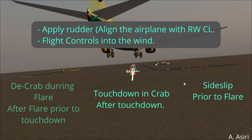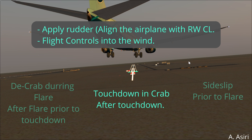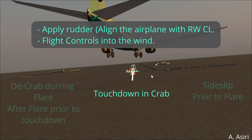For the decrab during flare technique — the first one I mentioned — you apply those steps after you start the flare. You begin the flare, and then you apply rudder to align the airplane body with the runway centerline and then flight controls into the wind. Now let's go back to the second technique: touchdown in a crab.